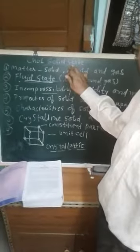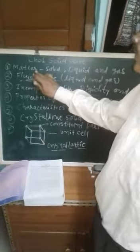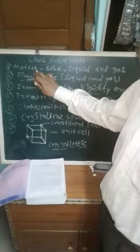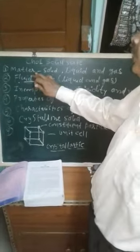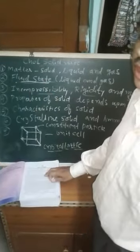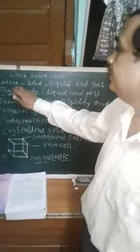Today I will teach Chapter 1: Solid State, Class 12 Chemistry. First topic is matter. Matter means anything which occupies space is known as matter. Everything that occupies space is known as matter.